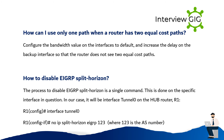How to disable EIGRP split horizon? The process to disable EIGRP split horizon is a single command, done on the specific interface in question. In our case, it will be interface Tunnel 0 on the hub router R1. R1# interface tunnel 0. R1# no ip split-horizon eigrp 123.